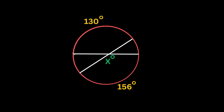This next problem is a little bit different. We have two chords that intersect, and we're looking for this missing angle at X. We're given two arc measures: this arc measure is 130 degrees and this arc measure down here is 156 degrees. In order to find this missing angle, all you have to do is take the average of these two arc measures. The reason we specifically use these two arc measures is because if I extend the arms of this angle right here...